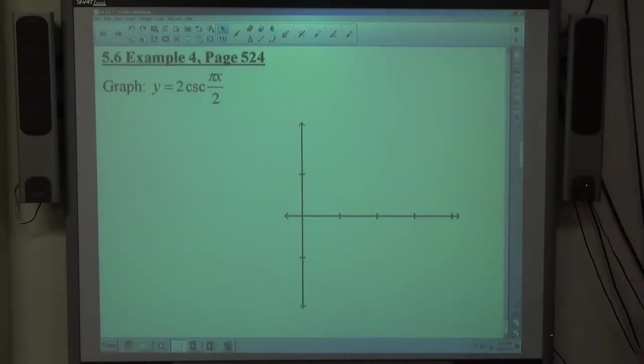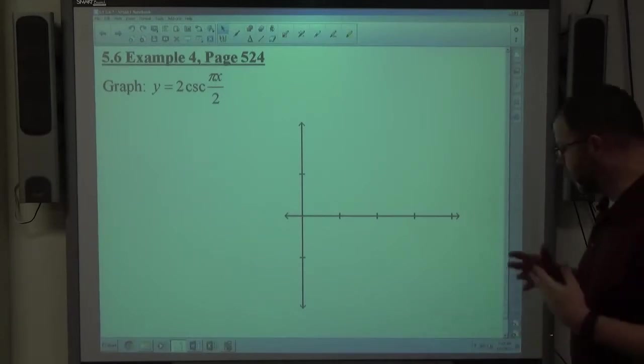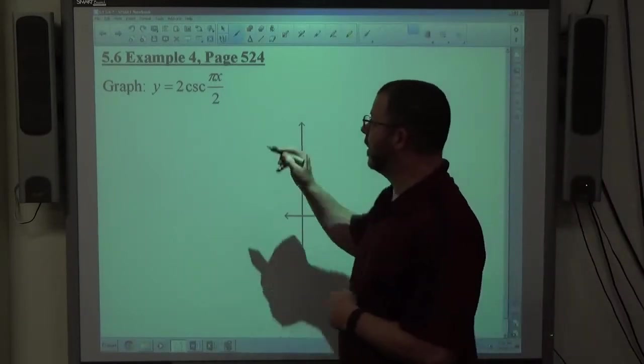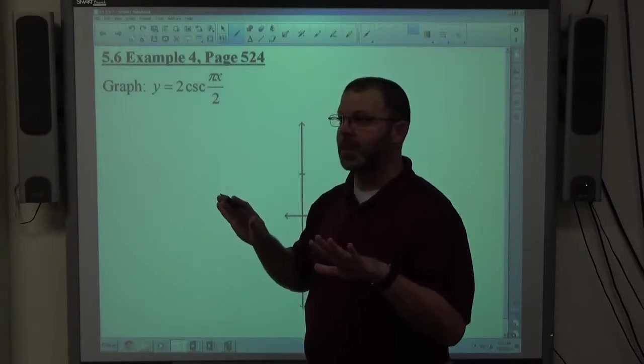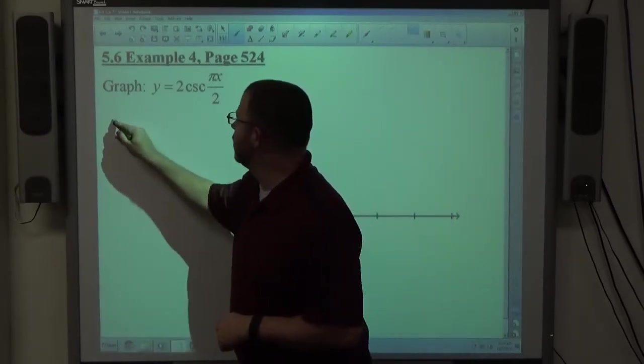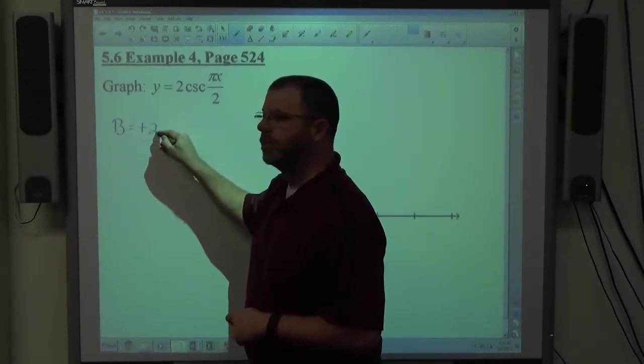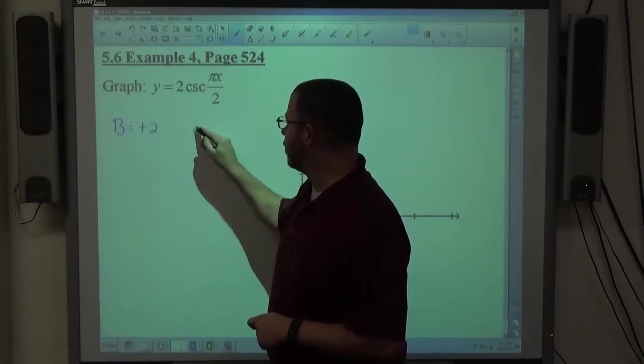Example 4, page 524. Graph y equals 2 cosecant of pi x over 2. So if I'm doing cosecant, I need to go immediately to sine, right? I can see that b's value is equal to positive 2, which if I'm doing sine, that means we go up first.